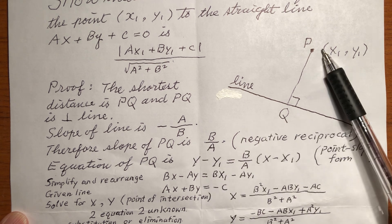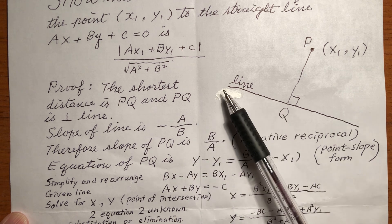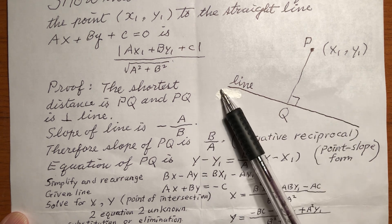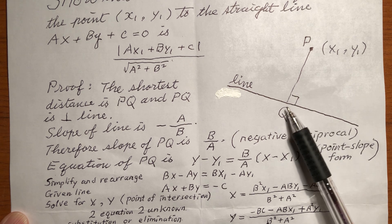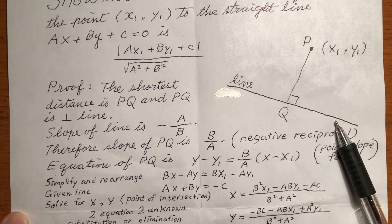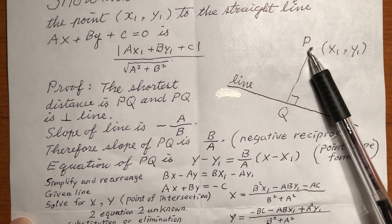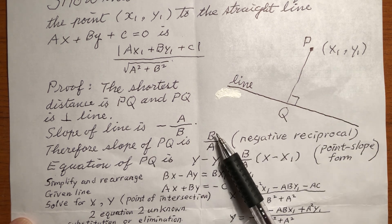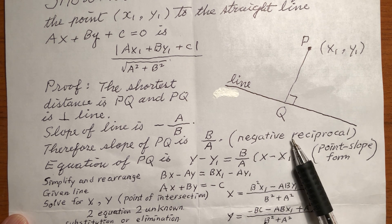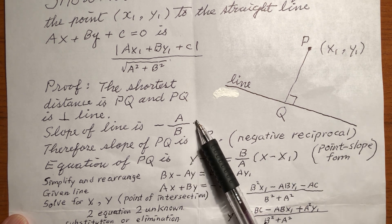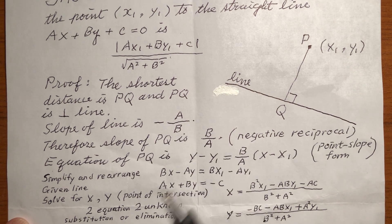What is the slope of the perpendicular line? When two lines are perpendicular, the product of their slopes is negative 1. So the slope of PQ is b over a, which is just the negative reciprocal of minus a over b.